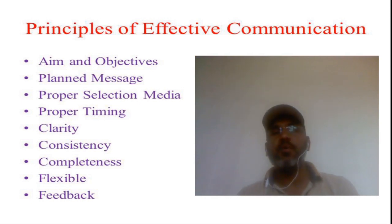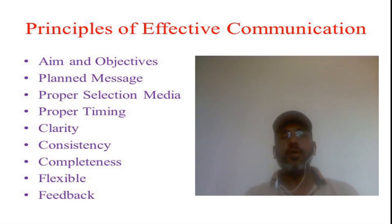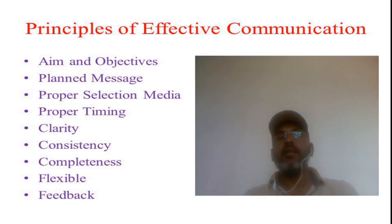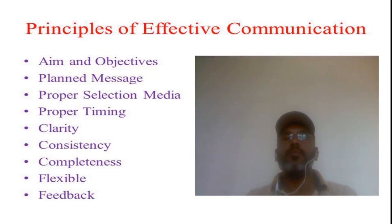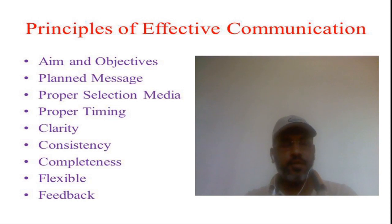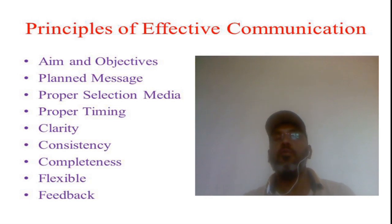The first principle of effective communication is aim and objectives. Behind every type of communication there is one aim and certain objectives are also there. Without those two things — aims and objectives — communication is not possible. Whenever we want to go for a communication process, there should be a proper and planned message. Without that particular proper and planned message, communication is not possible.